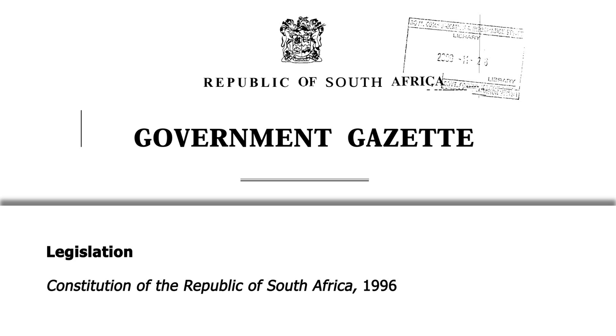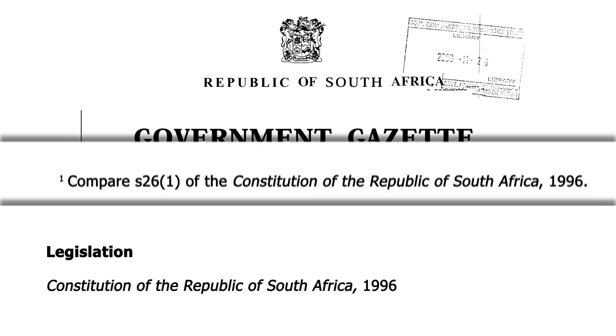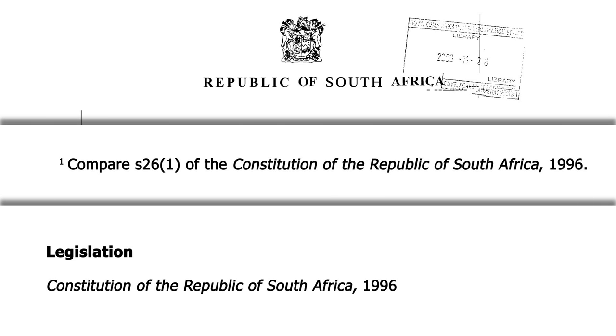Take a look at a typical example of a footnote to the Constitution. Can you see that Section 26, Part 1 is indicated? Remember the italics.